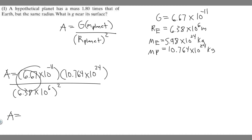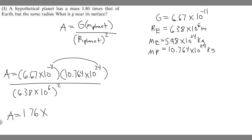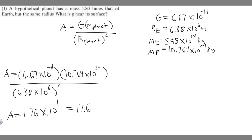To solve this, take 6.67, multiply by 10.764, and then divide that number by 6.38 squared. That gives us the initial number: 1.76. We still need the power of 10, so we find that by working with the exponents. Up top: minus 11 plus 24 is 13. On the bottom: 2 times 6 gives us 10 to the 12th. Then we subtract: 13 minus 12 is just 1, so it's 10 to the 1. Taking 10 multiplied by 1.76 gives us 17.6. This is your acceleration, measured in meters per second squared — so 17.6 meters per second squared is your answer.